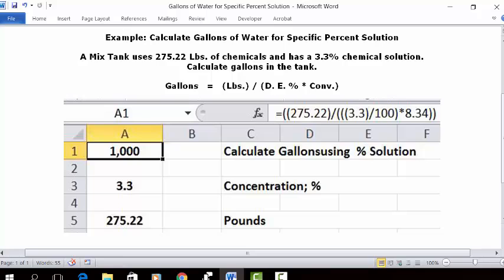In cell C1 is your answer, which is 1,000 gallons in this mix tank. That's your answer.